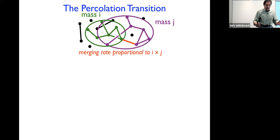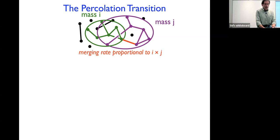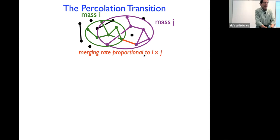In terms of aggregation kinetics, we have exactly the same process as before — clusters of given masses join with a merging rate proportional to IJ. We can write down a rate equation for the evolution of the mass distribution just as in constant-kernel aggregation, but now the merging rate is I times J. The master equation has a gain term proportional to IJ · c_I · c_J summed over I+J = k, and a loss term proportional to k · c_k times the sum of I · c_I.